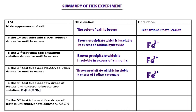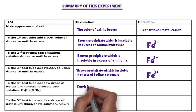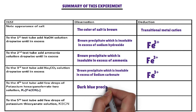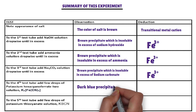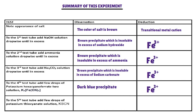Confirmatory tests. First confirmatory test: in the fourth test tube, potassium hexacyanoferrate-2 solution is added. The cation that forms a dark blue precipitate with potassium hexacyanoferrate-2 is iron-3-ion. Iron-3-ion is confirmed. The cation present in the salt is iron-3-ion.